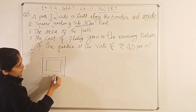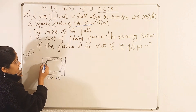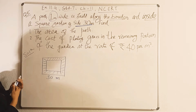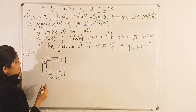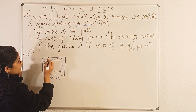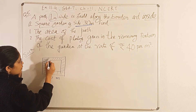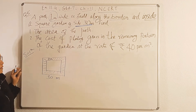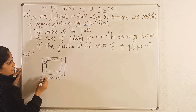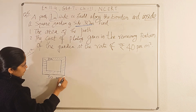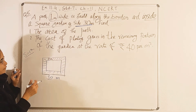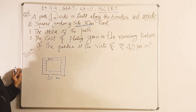So this path is on the inside — yeh path aapka andar ki taraf hai. And this path is 1 meter wide. So this 1 meter wide path is drawn inside, along the border. The width of that path is 1 meter, and that is given to us.